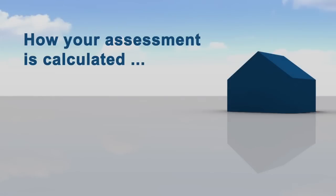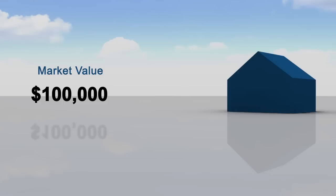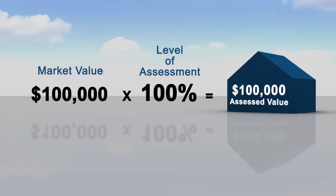Once your assessor determines your property's market value, he or she will calculate your total assessment by multiplying the market value of your property by the local level of assessment. If your city or town was recently reassessed, the level of assessment will still be close to 100% of market value.